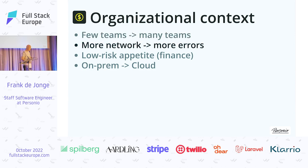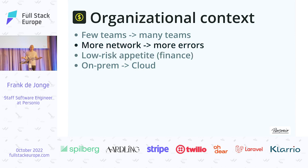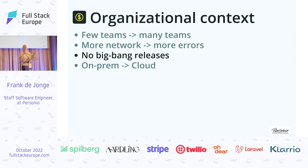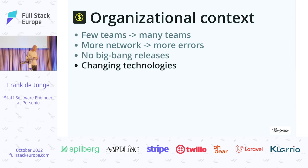We were moving to services, which means more networks and more errors. We're in finance, and typically in finance people don't like to take risks — so no big bang releases for anything. Everything introduced needs to be backwards compatible, possibly doing two things at the same time when transitioning. We were also transitioning from on-prem to cloud, which means technologies will be changing.